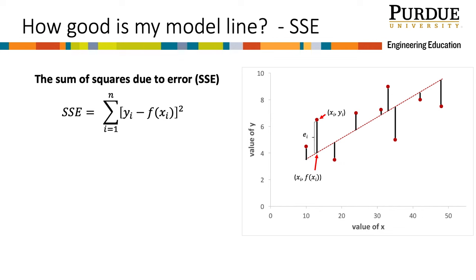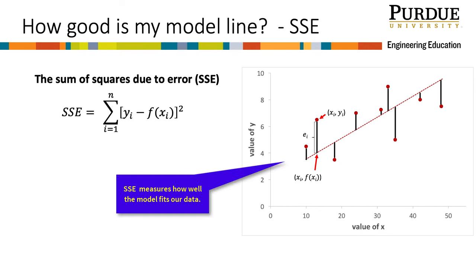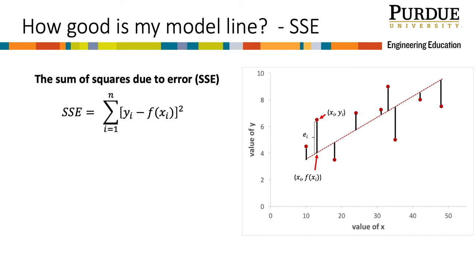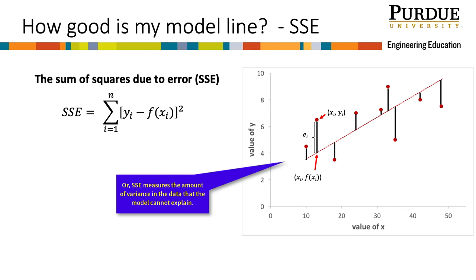Just as a reminder, the sum of squares due to error, or SSE, measures how well our prediction matches the actual data. Because a low SSE means the model fits the data well, you can think of SSE as measuring how poorly our model matches the data — it measures the amount of variance in the data that the model cannot explain. You can use SSE as a goodness-of-fit measure whether we use least squares regression or some other form of linear regression such as the two-point method.